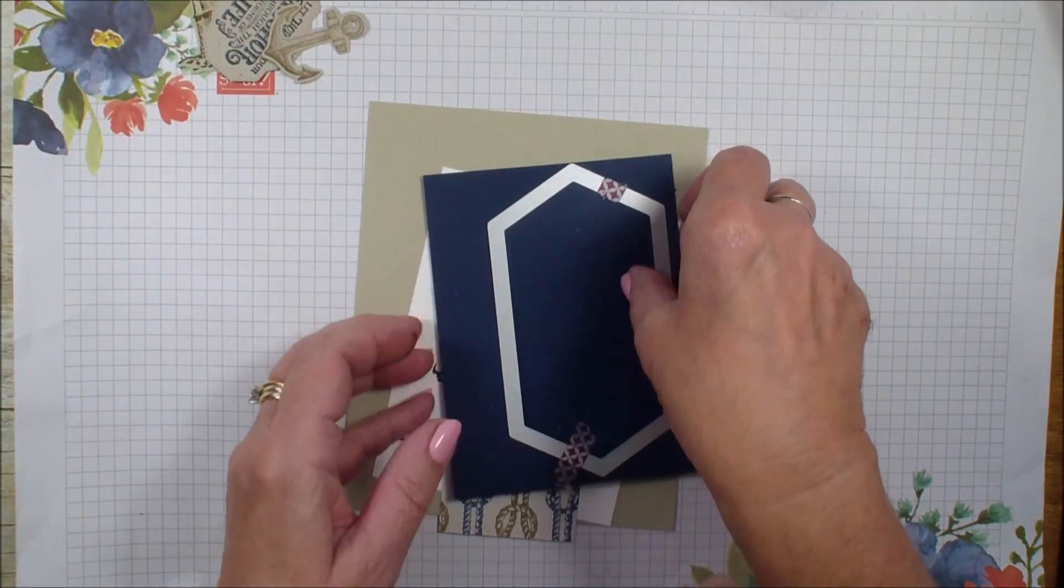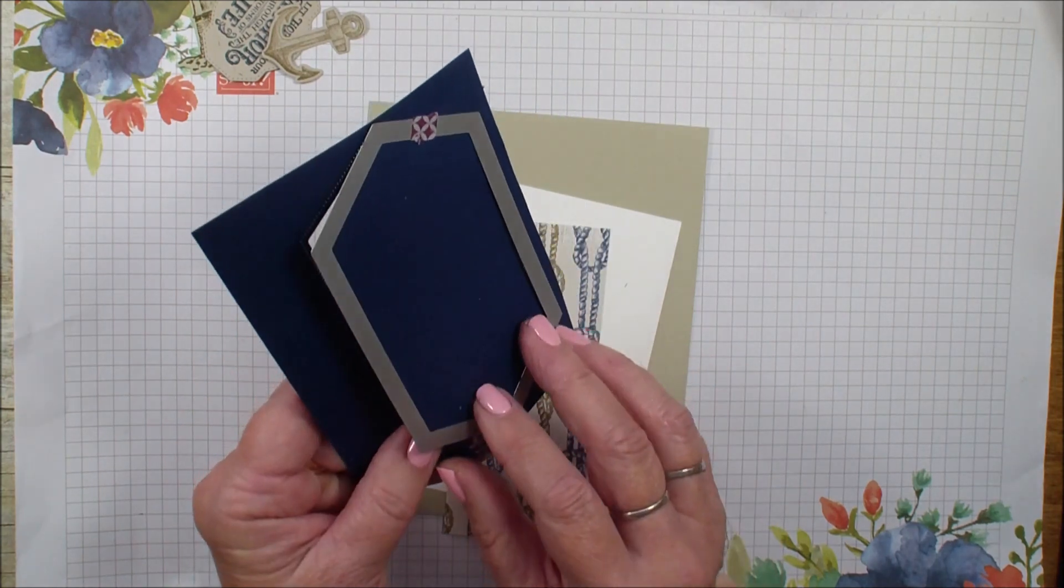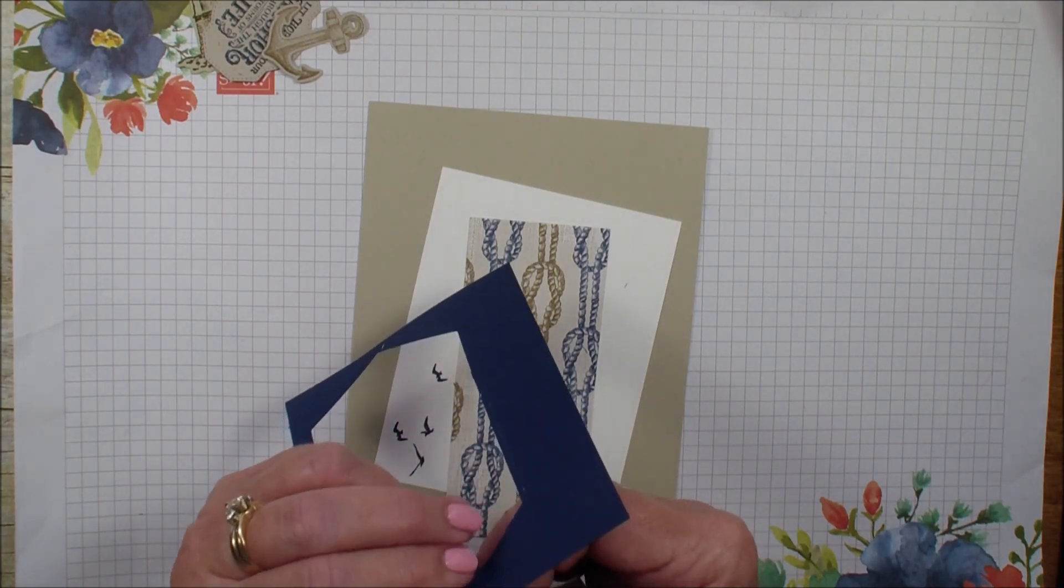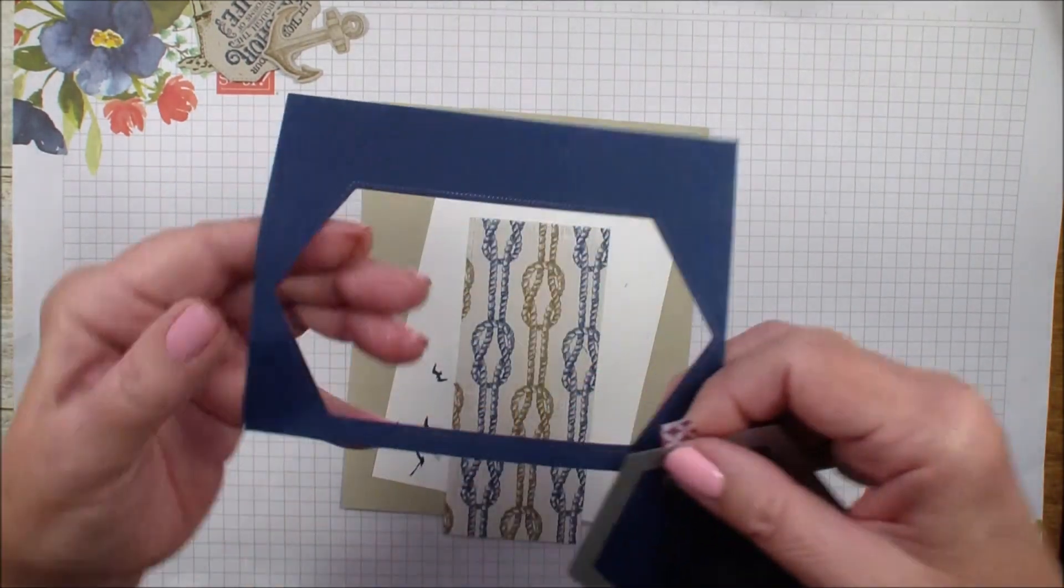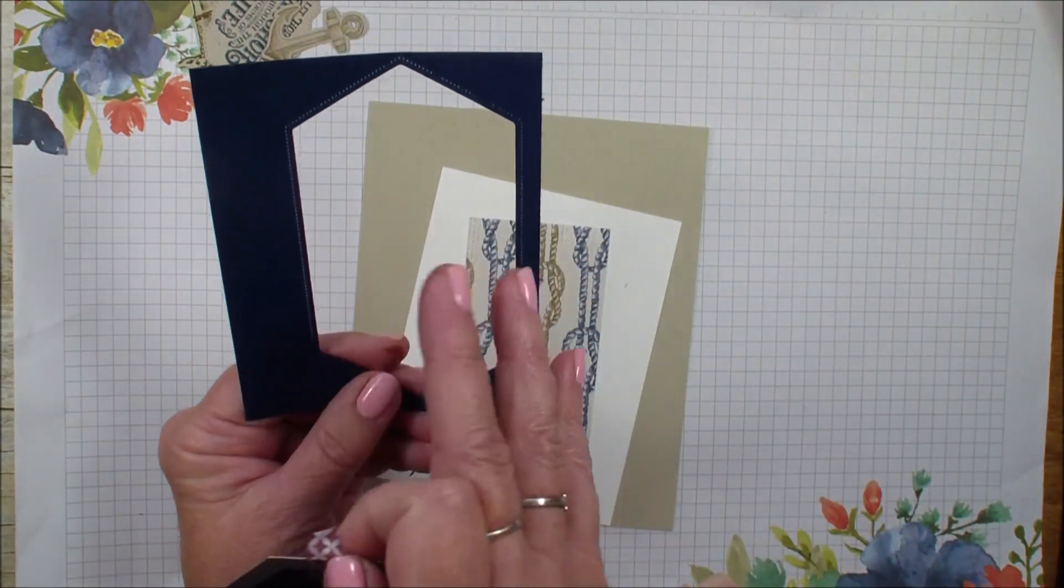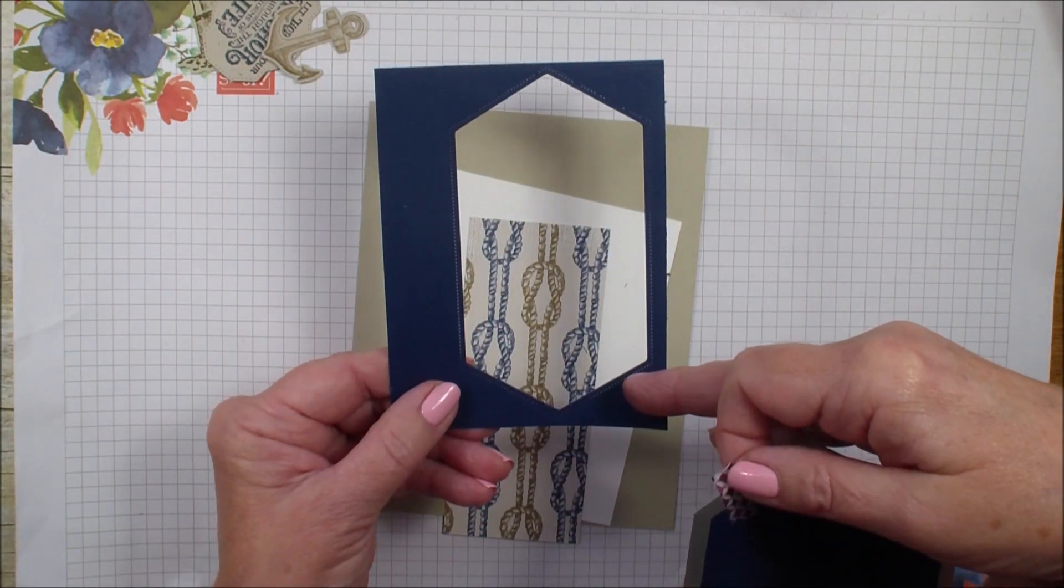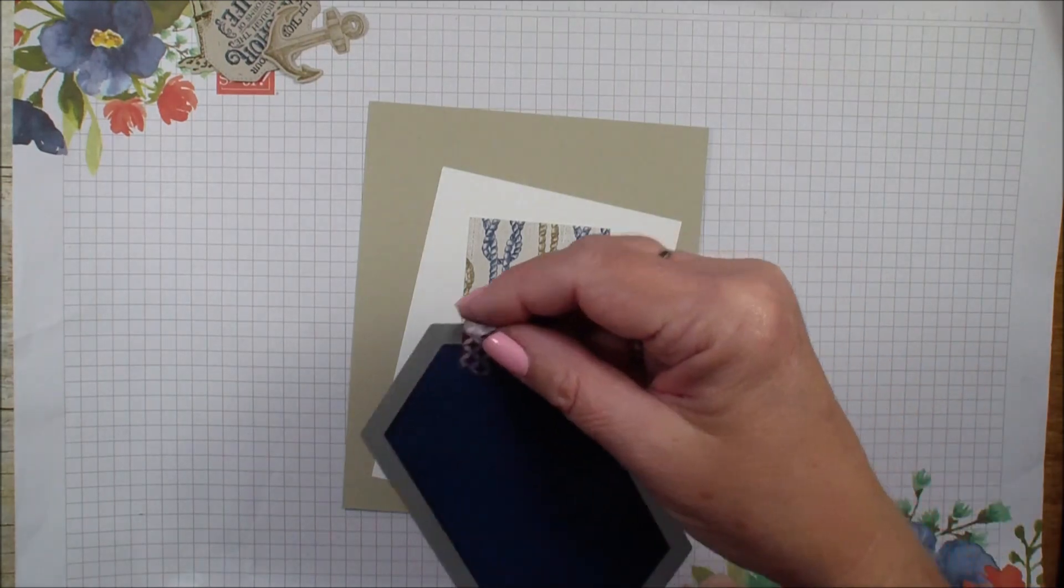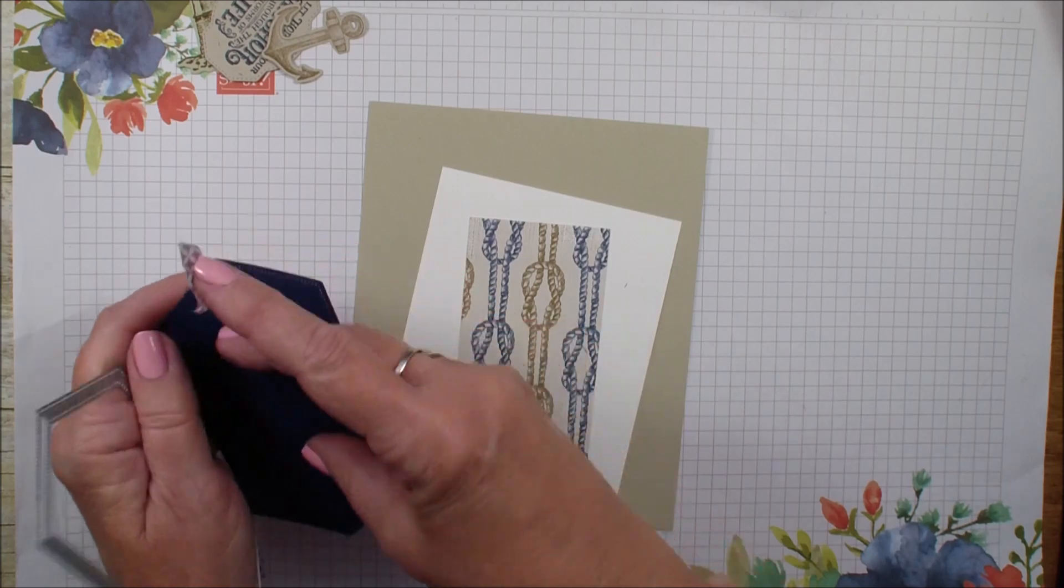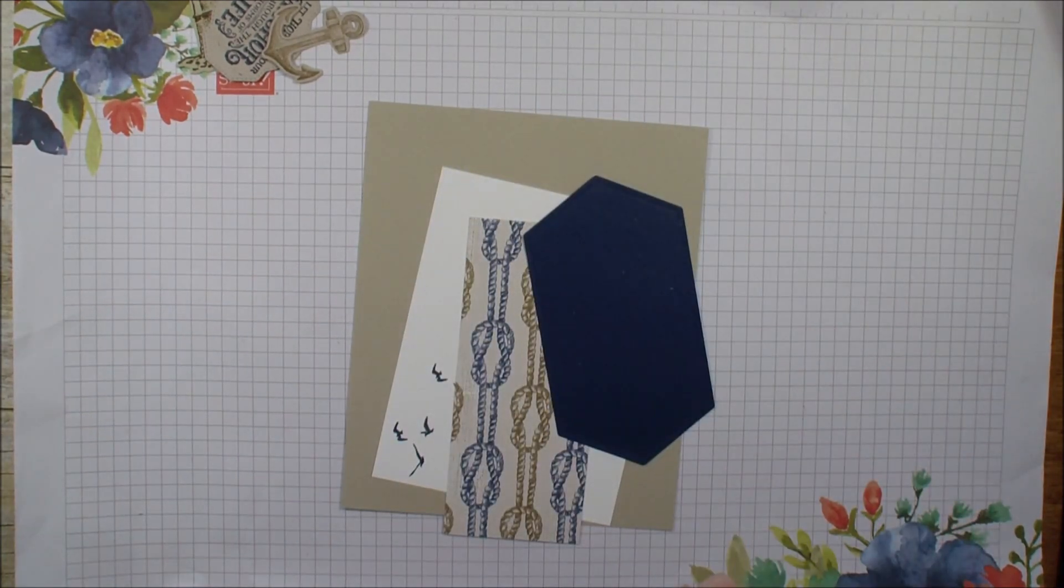I have also taken a four by five and a quarter piece of Night of Navy. I used the Stitch Nested Labels Die and cut this piece out that I'm going to be using on my card today over to the side of the four by five and a quarter. And next Tuesday, I'm going to use the negative piece for my Creative Fold. So when you're using the Stitch Nested Labels, it is great to think ahead because then you can use those images over and over again.